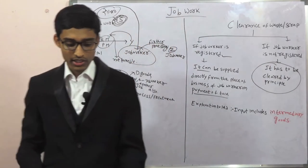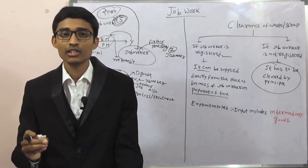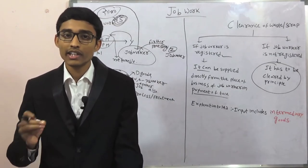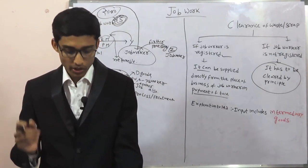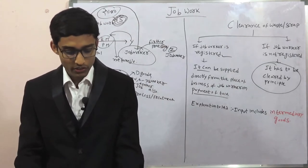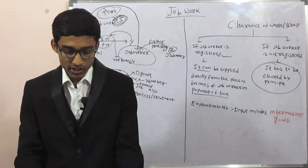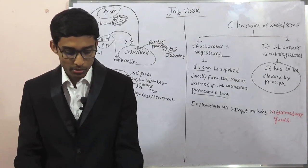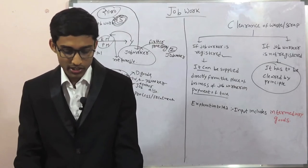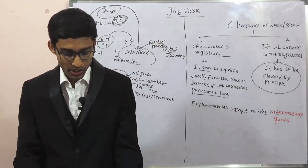As per the explanation to section 143, input includes intermediary goods also. So, intermediary goods can also be cleared without payment of tax. As per the explanation to section 143, input includes intermediary goods arising out of a process carried out by the principal or job worker. So, both inputs and intermediary products can be cleared by the job worker without payment of tax.